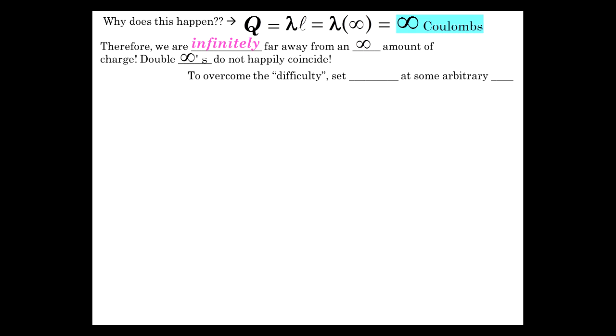To overcome the difficulty, calling it a difficulty, it's not really that hard to deal with. Let's just set V is equal to zero, not at infinity, but some finite location R zero. So here's what that looks like. We have our line of charge, there's our A, there's our zero. Where is it? You see where it is, it's right there. It's some arbitrary R zero. So that's where V is equal to zero.